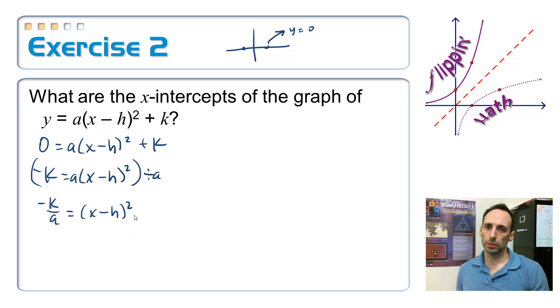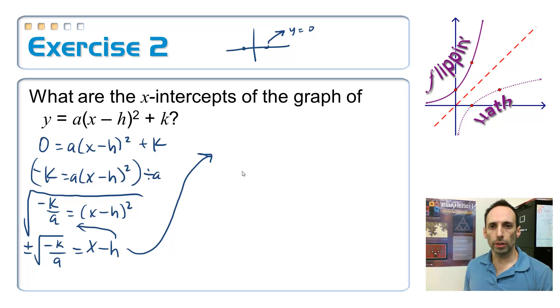So I have negative k over a equals x minus h squared. How do I get rid of a square? Take the square root of both sides. And remember, when I take the square root as part of solving an equation, I get a plus and a minus. So this is plus minus square root of negative k over a equals x minus h. And finally, let's take that h over there.